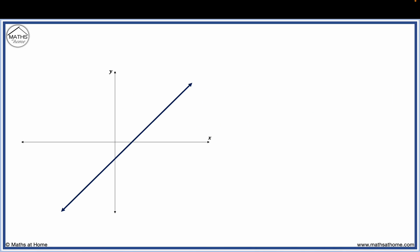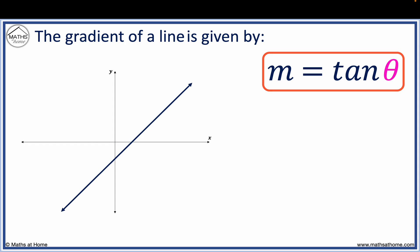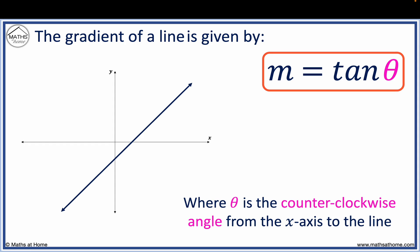The gradient is the steepness, or slope, of a line. The gradient of a line is given by m equals tan theta, where theta is the counterclockwise angle from the x-axis to the line as shown.